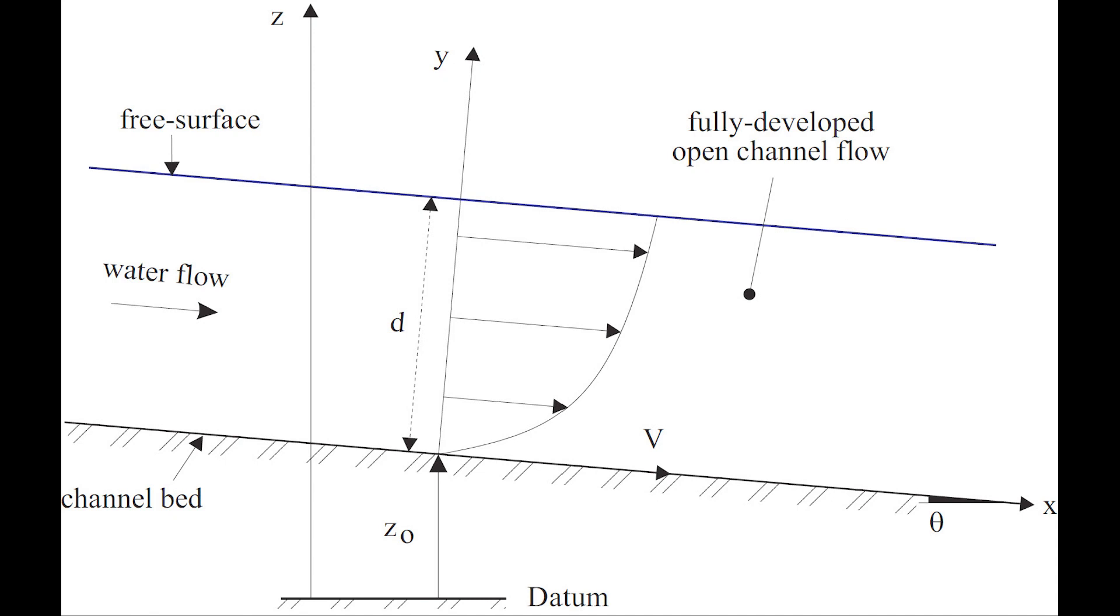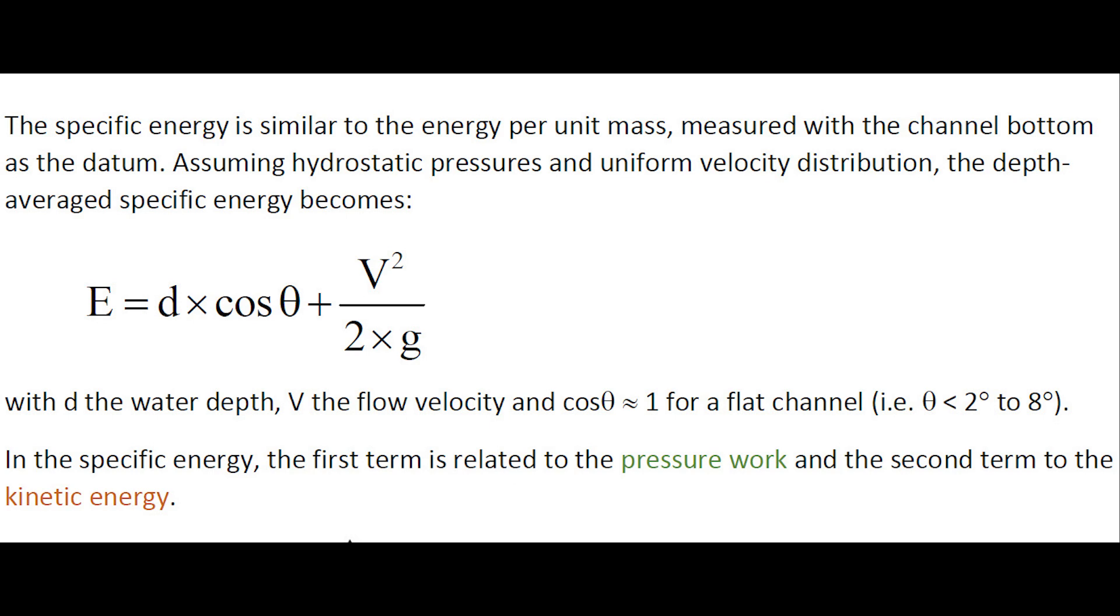with d the water depth, V the flow velocity, and cosθ ≈ 1 for a flat channel with slope less than 2° to 8°.